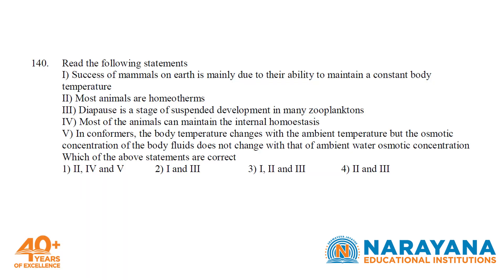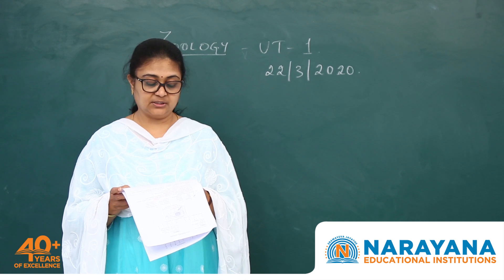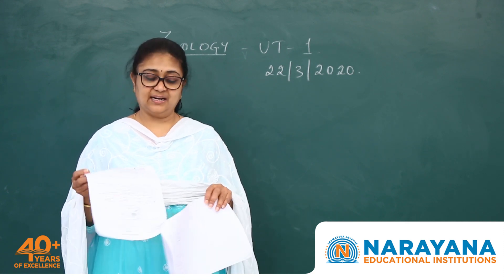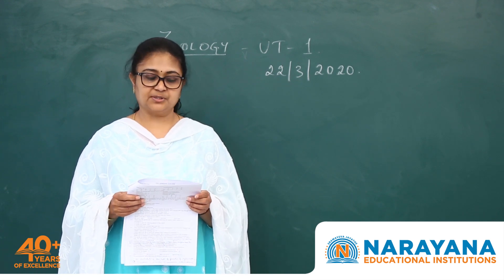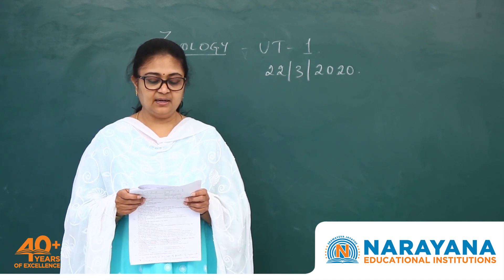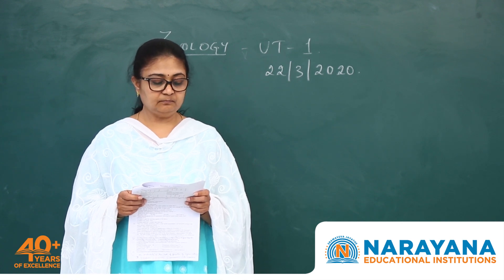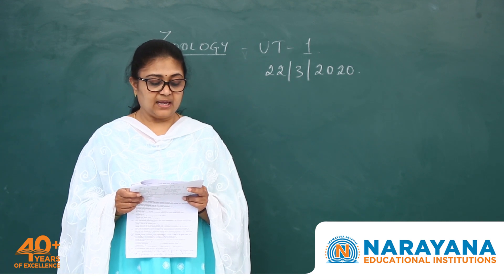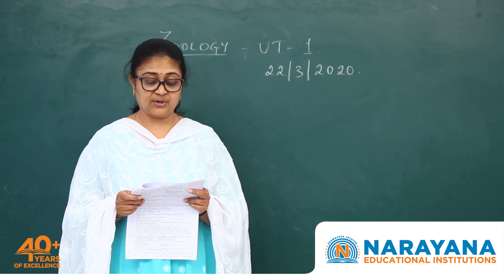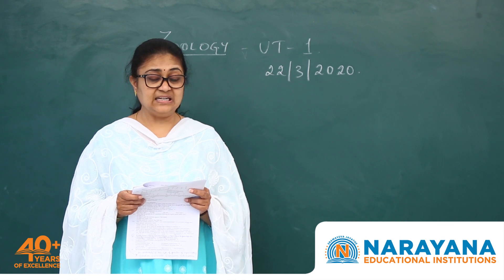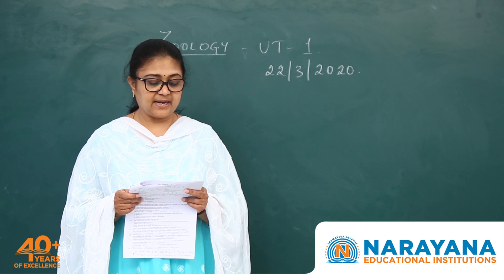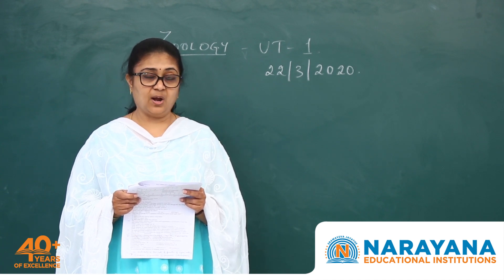Question 140: Statement 1 — success of mammals on earth is mainly due to their ability to maintain a constant body temperature — is obviously correct. Statement 2 — most animals are homeotherms — is incorrect; most are poikilotherms; only birds and mammals are homeotherms. Statement 3 — in conformers the body temperature changes with the ambient temperature — is right. However, the part stating that osmotic concentration of body fluids does not change with ambient water osmotic concentration is incorrect, making statement 4 overall incorrect. The correct statements are 1 and 3 only.